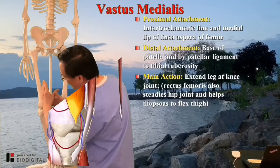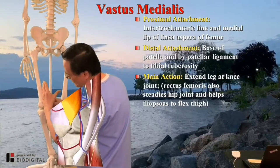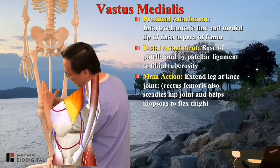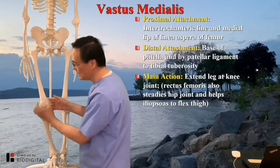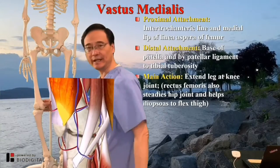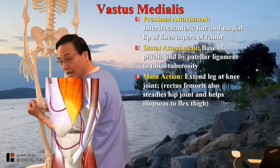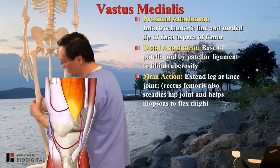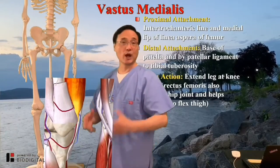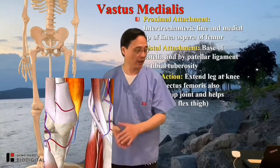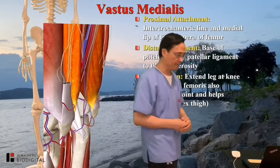The VMO is very important — it is the muscle you want to activate all the time in order to keep the kneecap medially tracking. Otherwise the kneecap keeps gliding outward, leading to poor tracking, runner's knee, chondromalacia patellae, and a lot of other problems.